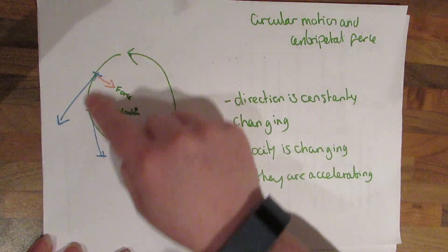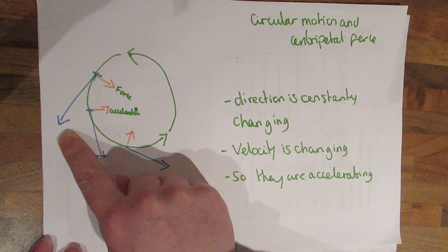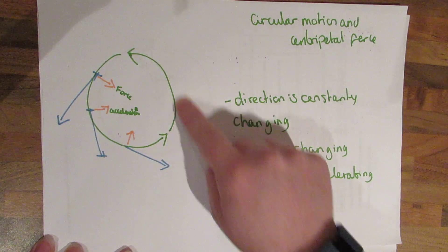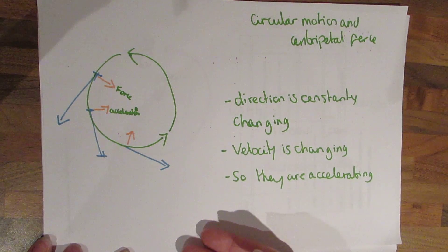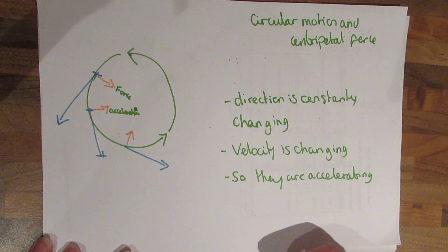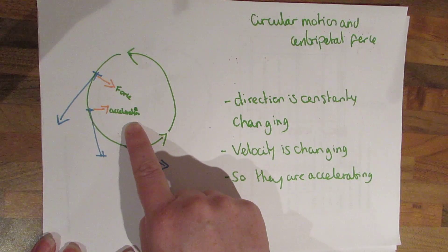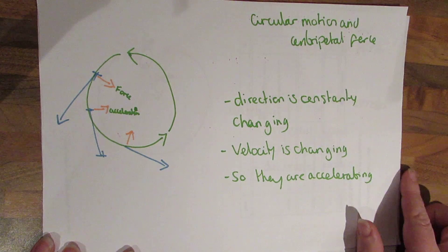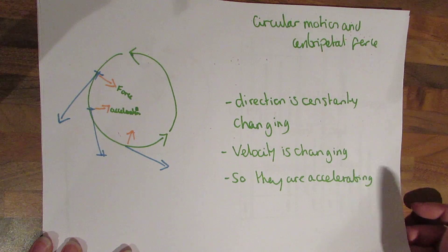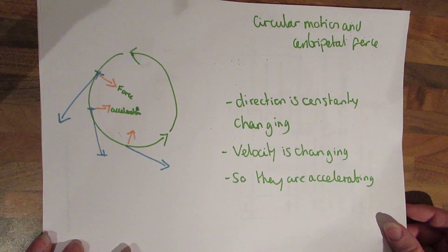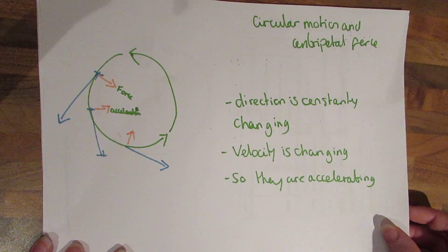Now when we have something move around in a circle, its inclination is to go in a straight line. But if we're moving around in a circle, for example if we're swinging something over our heads or if it's fairground ride, we are forcing it to change direction. The force is going to be acting into the middle, the acceleration is going to be acting into the middle. Because the direction is constantly changing, the velocity is constantly changing and because the velocity is constantly changing, they're constantly accelerating even if they're moving at a steady speed.